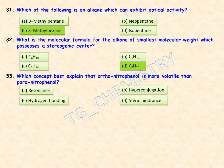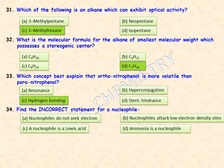Which concept best explains that ortho-nitrophenol is more volatile than para-nitrophenol? Options are resonance, hyperconjugation, hydrogen bonding, and steric hindrance. The answer is option C — hydrogen bonding — due to intramolecular hydrogen bonding in ortho-nitrophenol.